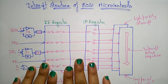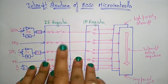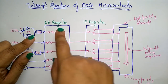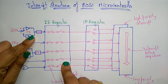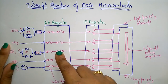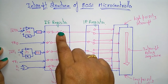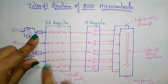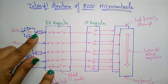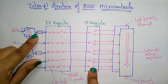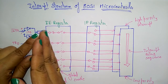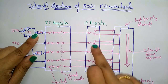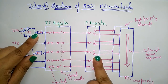Here you can see the interrupt structure of the 8051 microcontroller. This is the interrupt enable register, which is used to indicate whether an interrupt is enabled or disabled — whether it is a serial interrupt, a timer interrupt, or an external interrupt. That is decided by the IE register. This is the interrupt priority register.